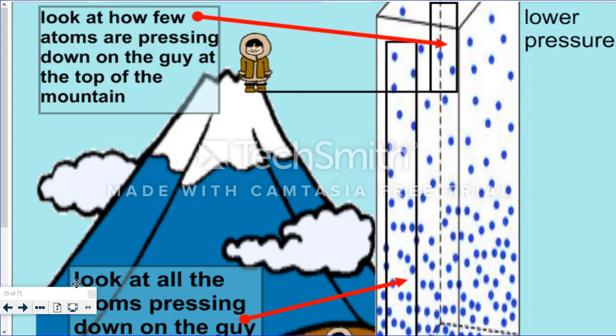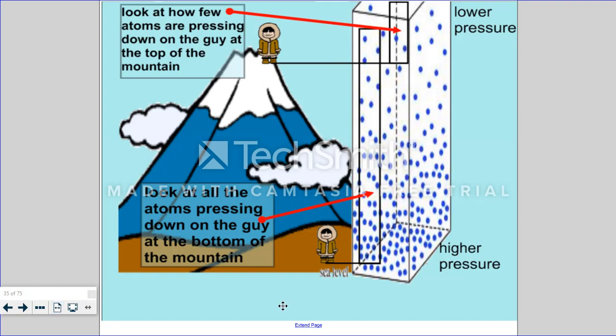This graphic shows what air pressure looks like on Earth. When you're at sea level there's high air pressure, as depicted by these atoms that are pressing down on this guy at the bottom of the mountain. As he rises up the top of the mountain there's fewer air molecules pushing down on him. So there's less pressure the higher you go in our troposphere, and there's more pressure the lower you go in our troposphere.